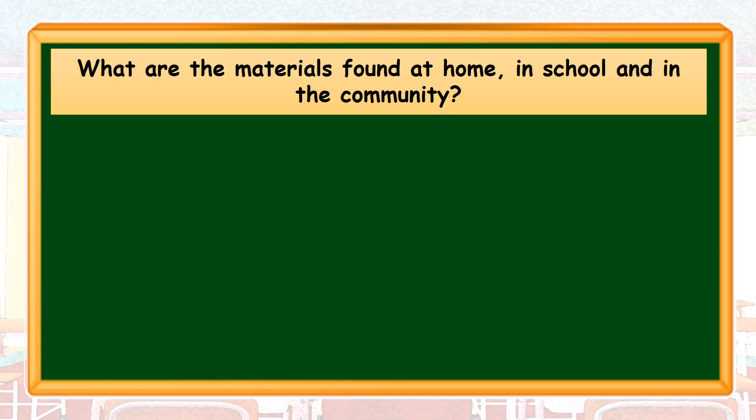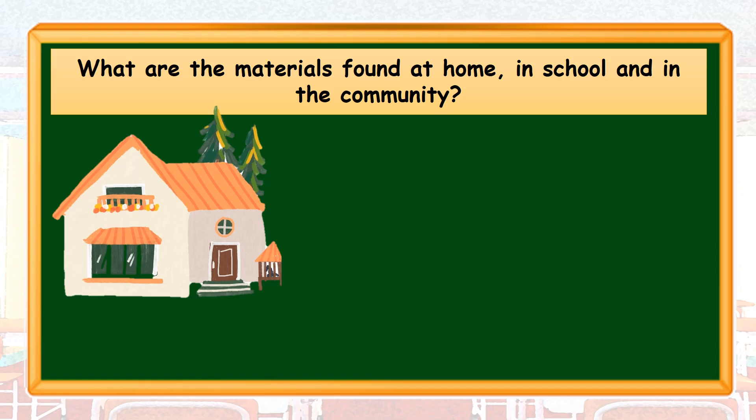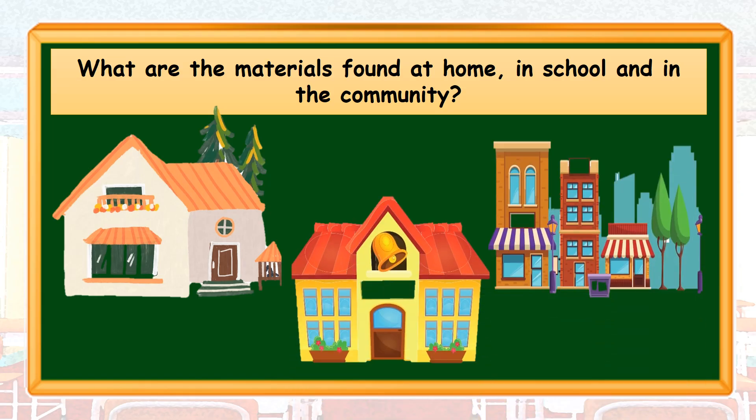Different kinds of materials can be found at home, in school, and in the community. Each material possesses different kinds of properties, which can be used to determine its usefulness: solubility, viscosity, chemical reactivity, hardness, brittleness, malleability, flammability, thermal conductivity, and flexibility, to name some properties. Can you list down 5 materials that can be found at home and in the community as well?